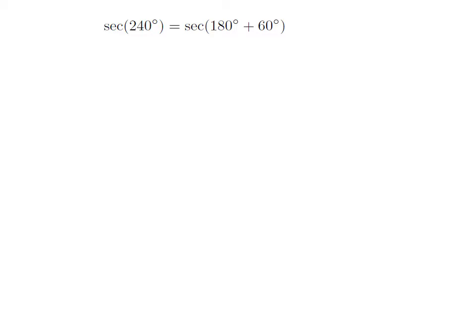As 240 degrees is equal to 180 degrees plus 60 degrees, so secant of 240 degrees is equal to secant of 180 degrees plus 60 degrees.